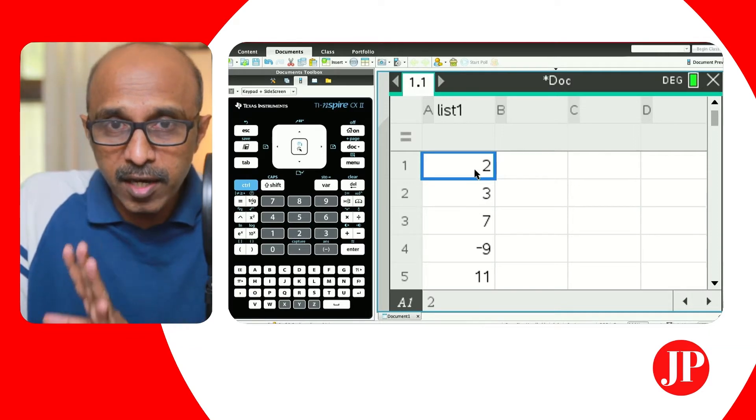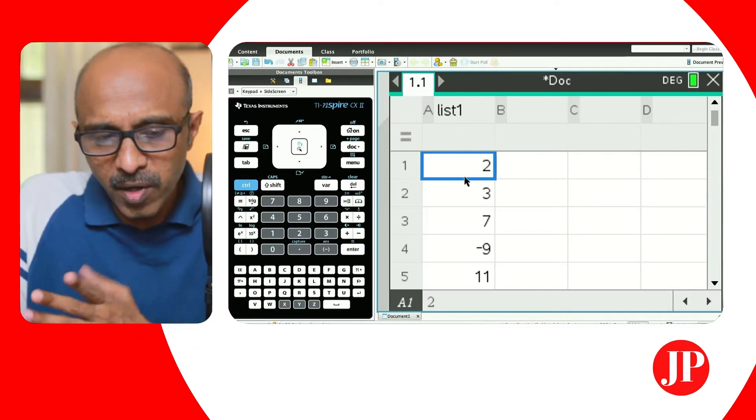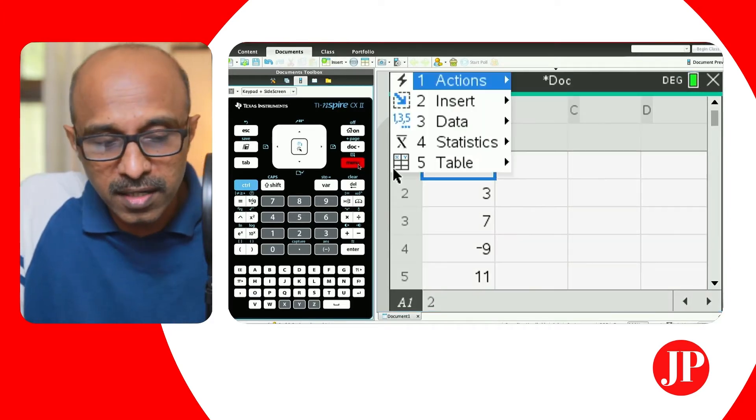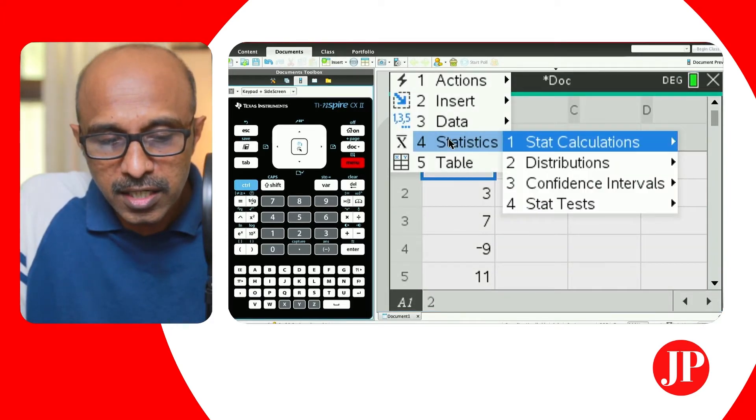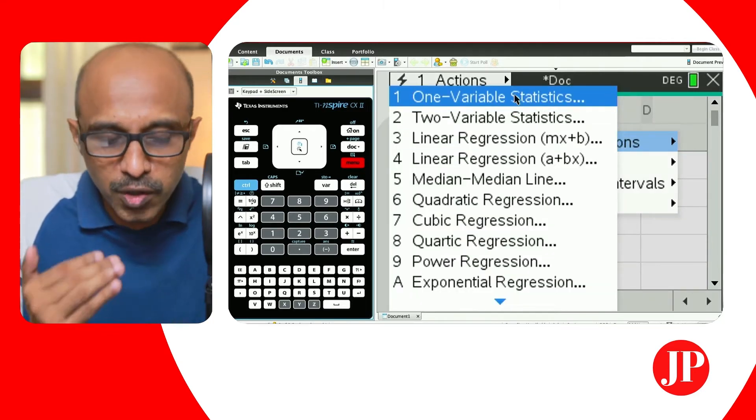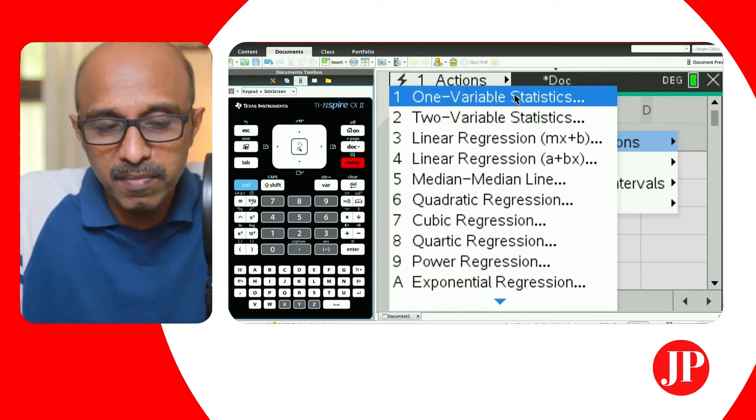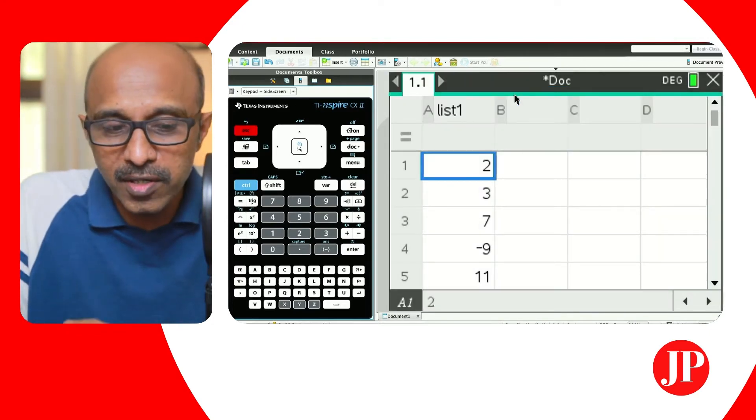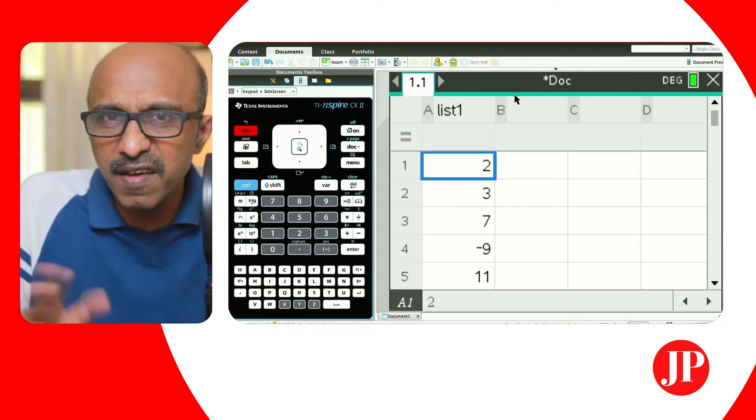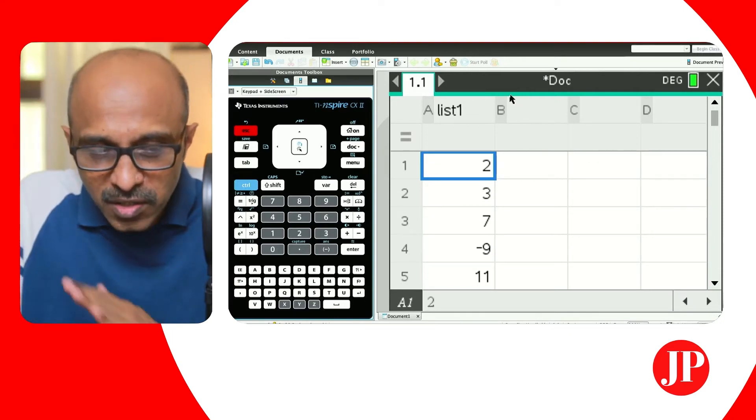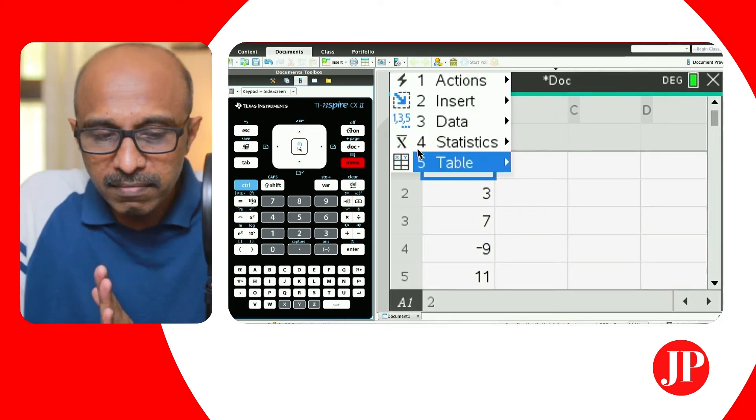And just by clicking on that particular column on any of the cells in the particular column, I'm just going to go to menu, the lighthouse. Menu, statistics, and stat calculations. And we're going to say one variable statistics. This is very, very, very intuitive and very, very, very user-friendly because they're all with words. And that's what I find it friendly because you don't have to remember a bunch of shortcuts like F1.